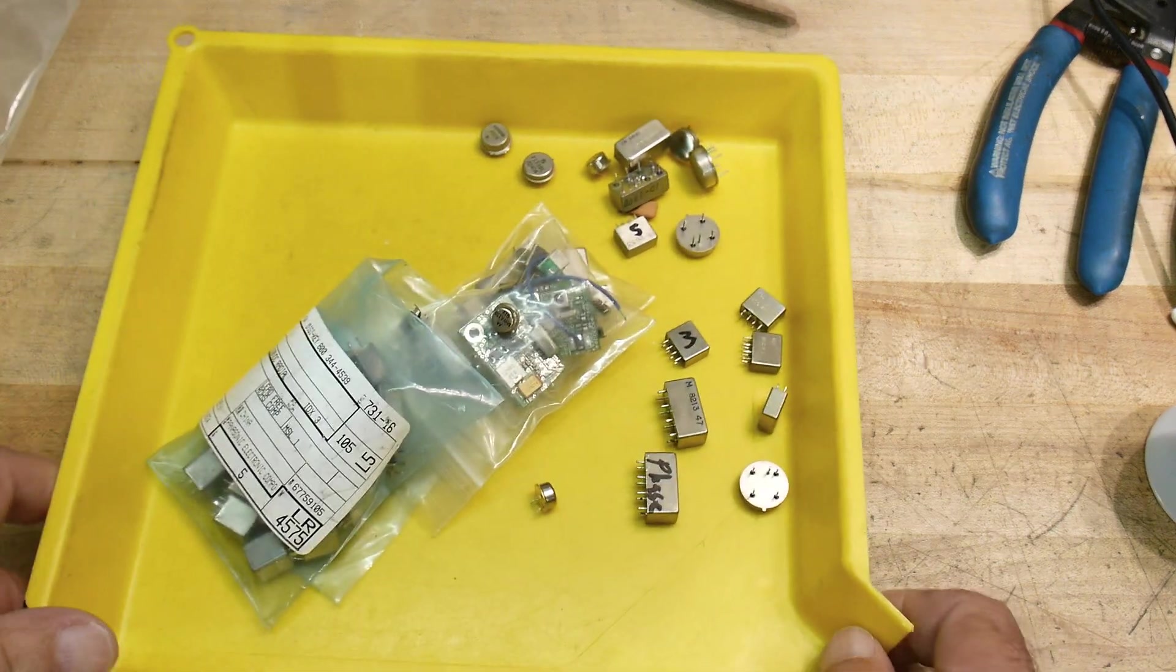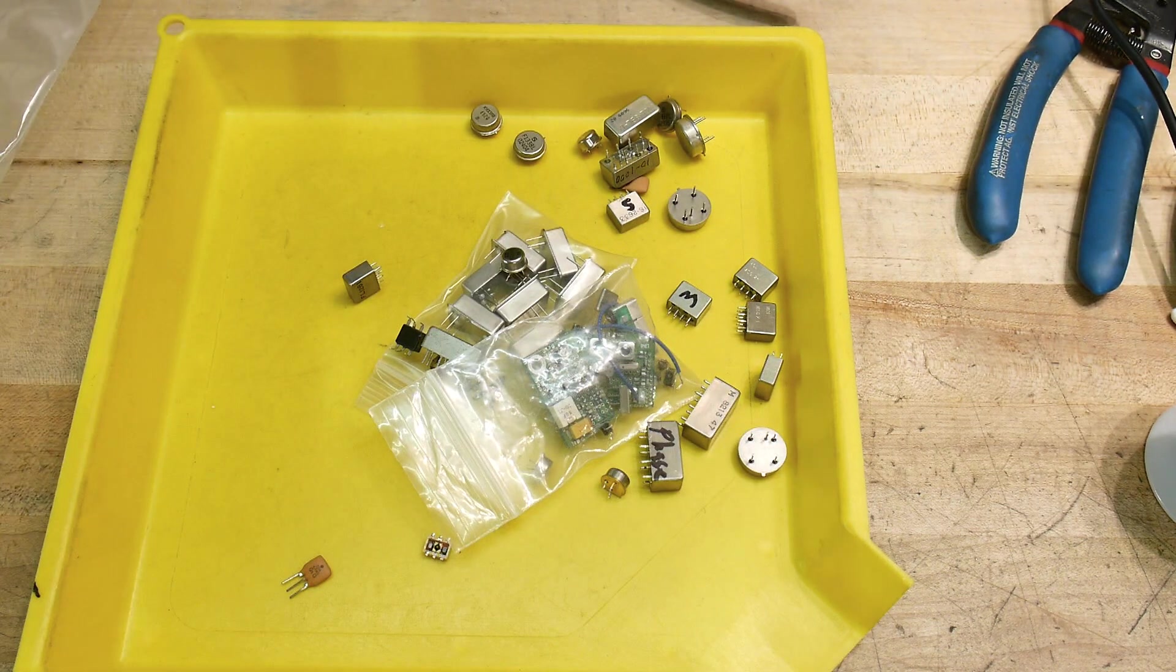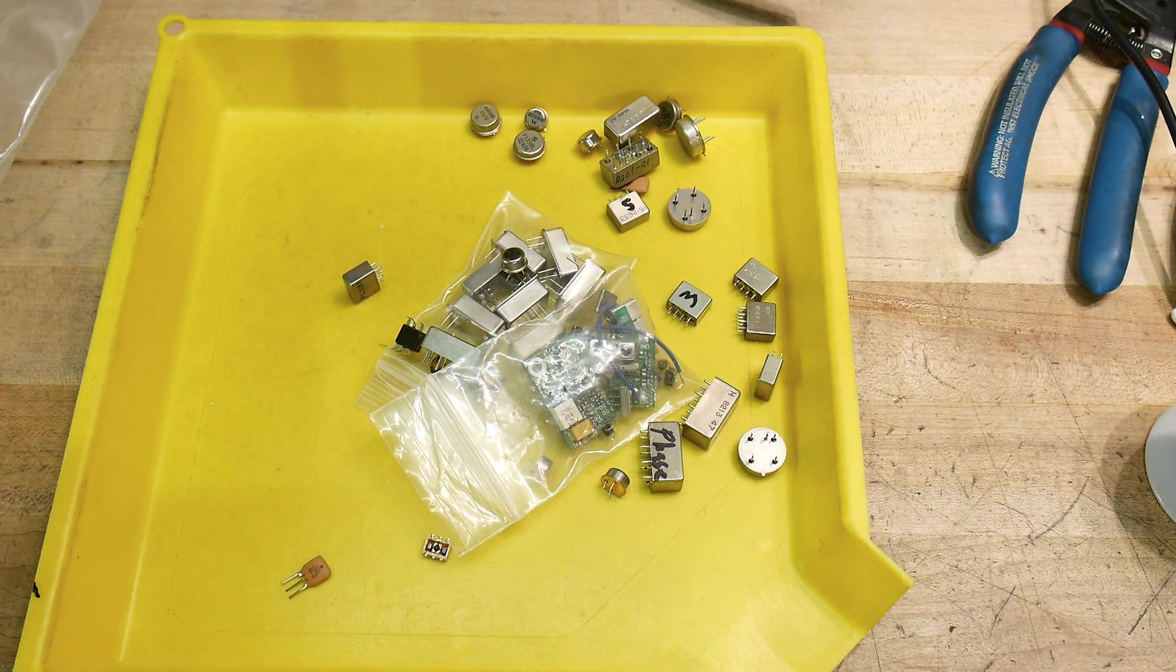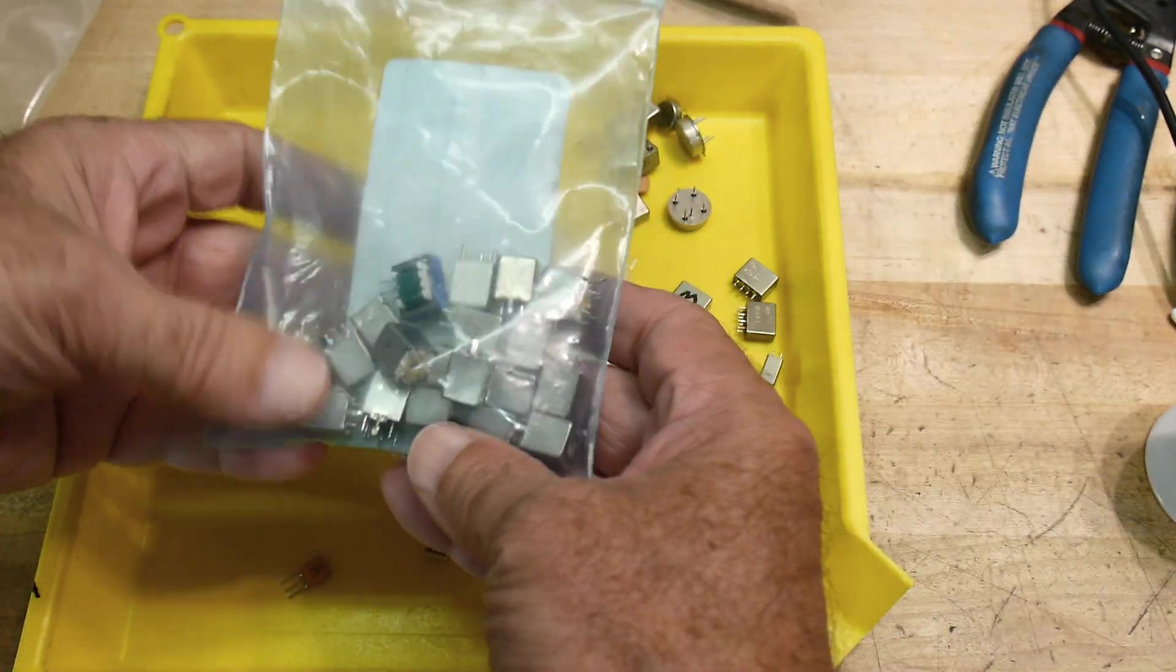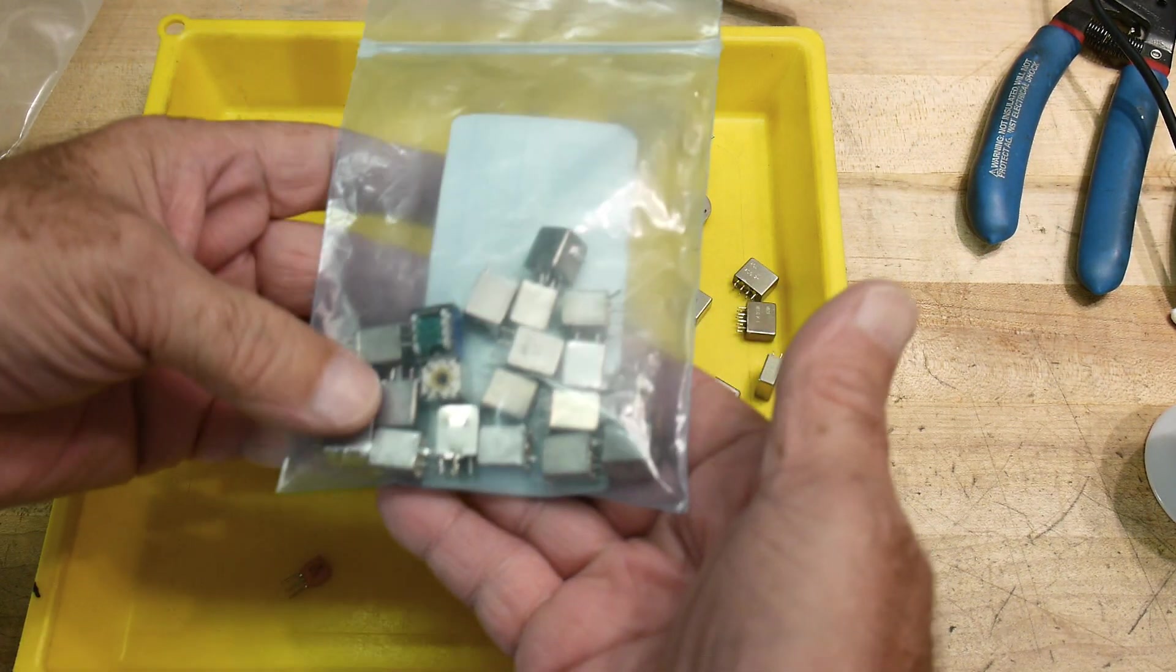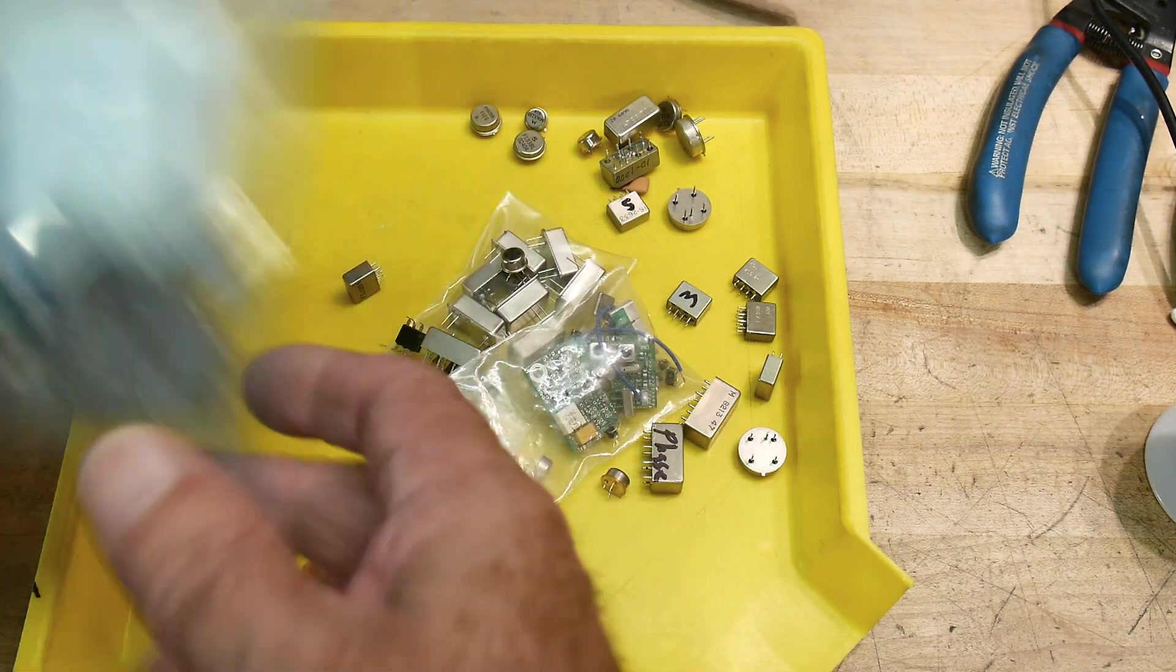Nice, all right, let's see, these are, oops, one landed on the floor, save that guy. These are IF cans out of like AM radios and other things, so I've got a bunch of IF cans and a couple transformers in here, but that's what's in this bag.